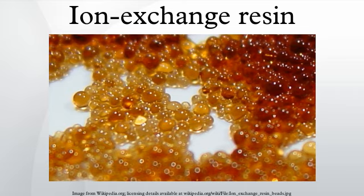Ion exchange processes are used to separate and purify metals, including separating uranium from plutonium and other actinides, including thorium, lanthanum, neodymium, ytterbium, samarium, and lutetium from each other and from the other lanthanides. There are two series of rare earth metals — the lanthanides and the actinides — whose members have very similar chemical and physical properties. Ion exchange was for many years the only practical way to separate the rare earths in large quantities. This application was developed in the 1940s by Frank Spedding. Subsequently, solvent extraction has mostly supplanted use of ion exchange resins except for the highest purity products.